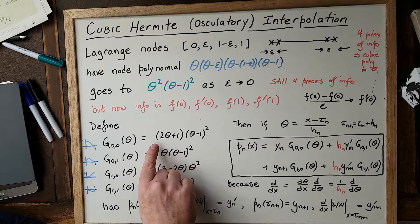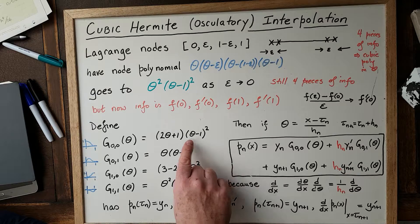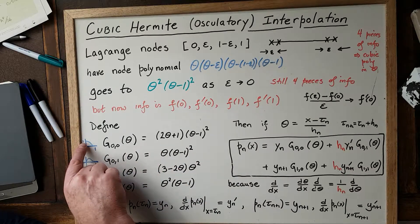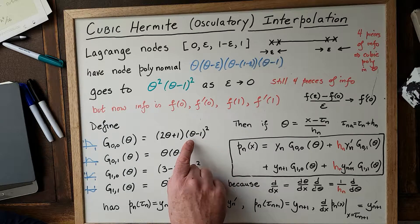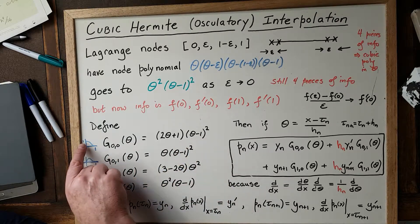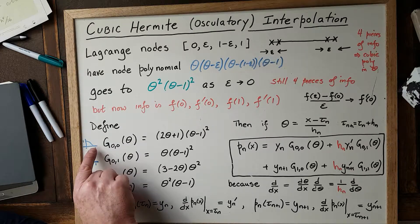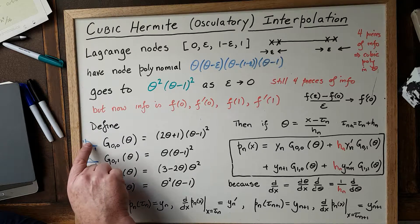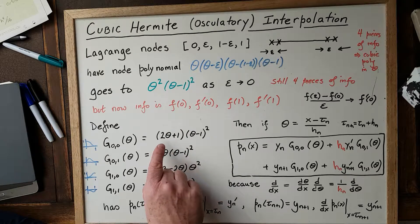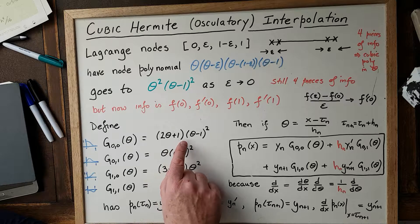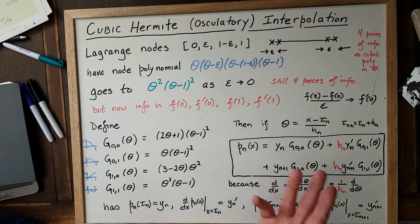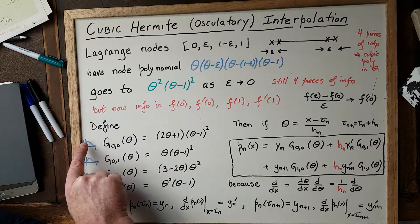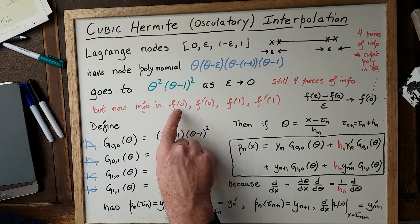Consider the polynomial (2θ + 1)(θ − 1)². Its value at theta equals zero is 1 times (−1)² = 1. Its value at theta equals one is zero, and the derivative there is also zero. It's not immediately obvious that the derivative is zero at theta equals zero, but differentiating via the product rule gives 2(θ − 1)² + (2θ + 1)·2(θ − 1), and plugging in theta equals zero yields exactly zero. So the graph is flat at zero, goes down, and is flat again at one.